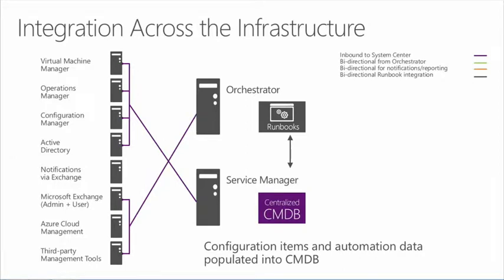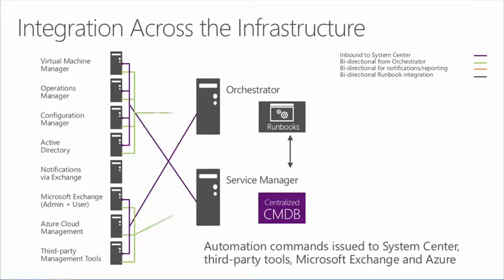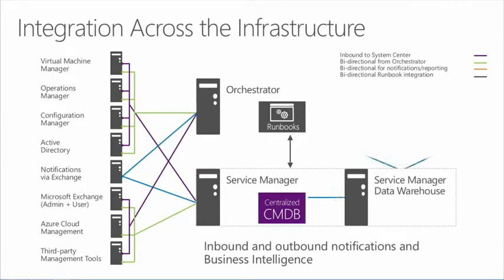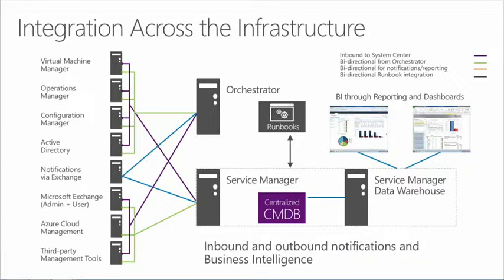I have all of my suite of products — components within System Center as well as my workloads and third-party management tools — that go into Orchestrator or come into Service Manager. I then have automation commands distributing to System Center through third-party tools, and now with Exchange, Azure, and even SharePoint through the Orchestrator SharePoint integration pack. I have inbound data for notifications — knowing the status of a given process or activity occurring in my environment. I pass that information on to the Service Manager data warehouse, where I've captured usage, performance, and service information, and can deliver that through reports to help make better decisions within the environment.